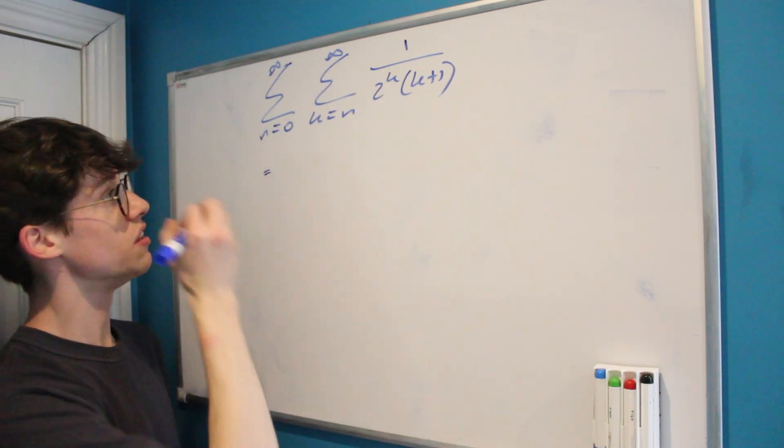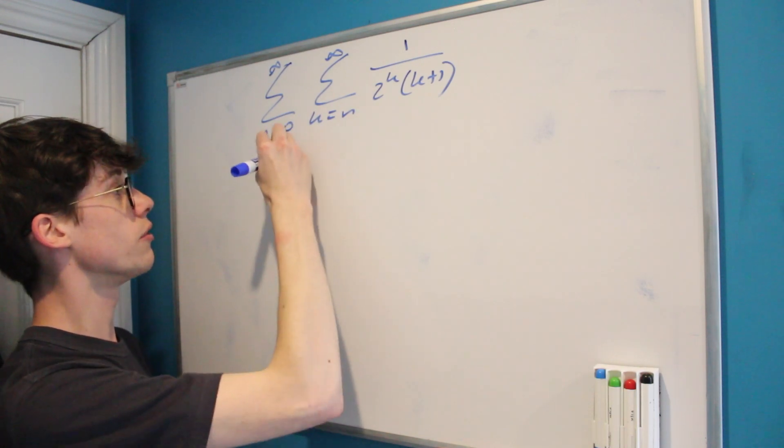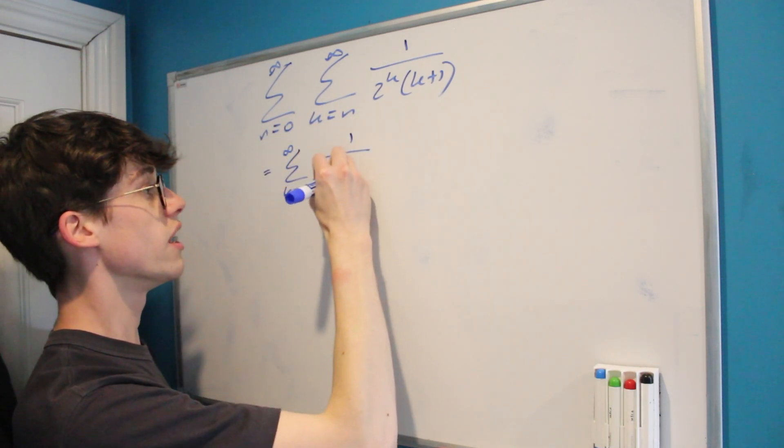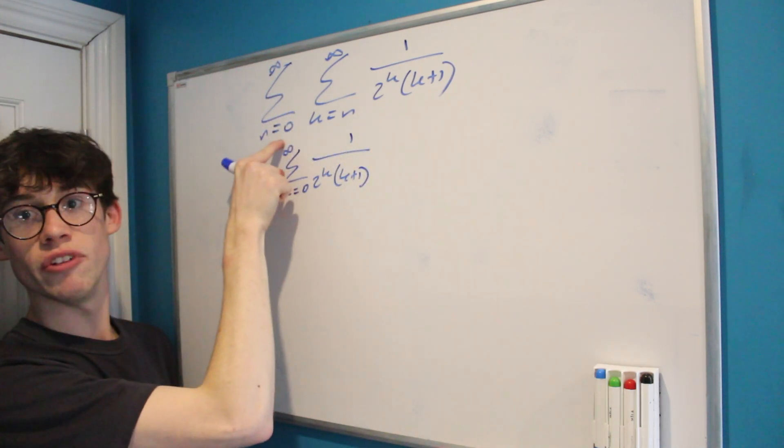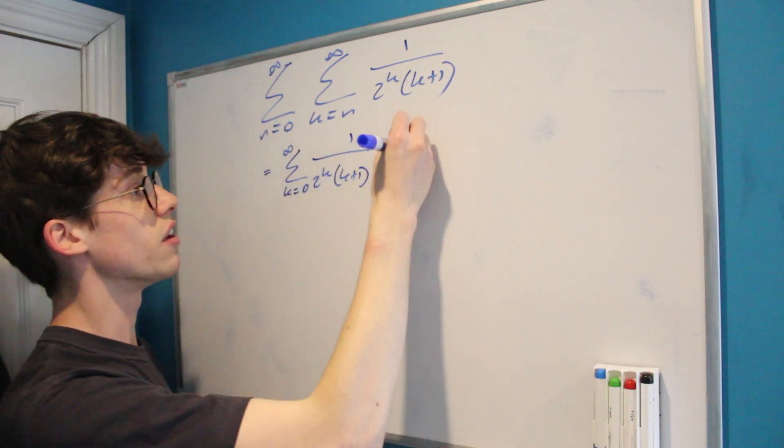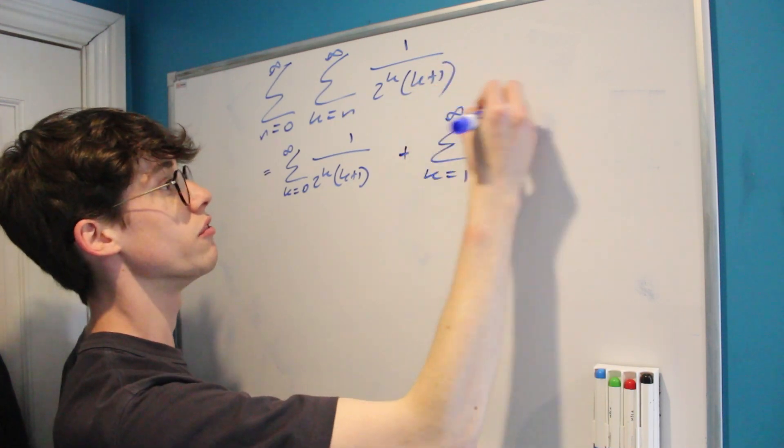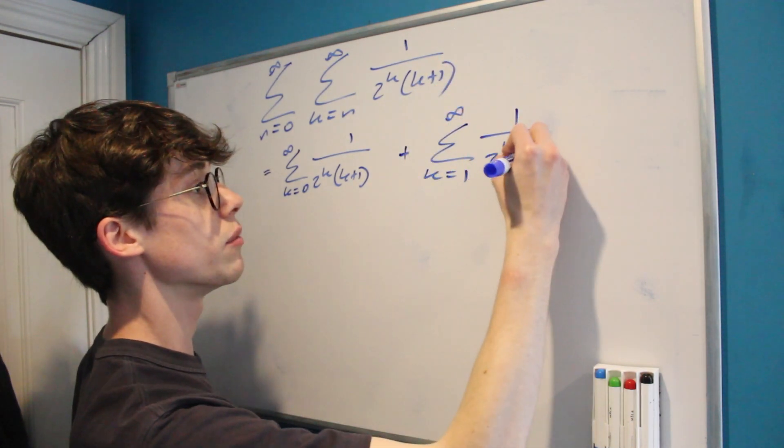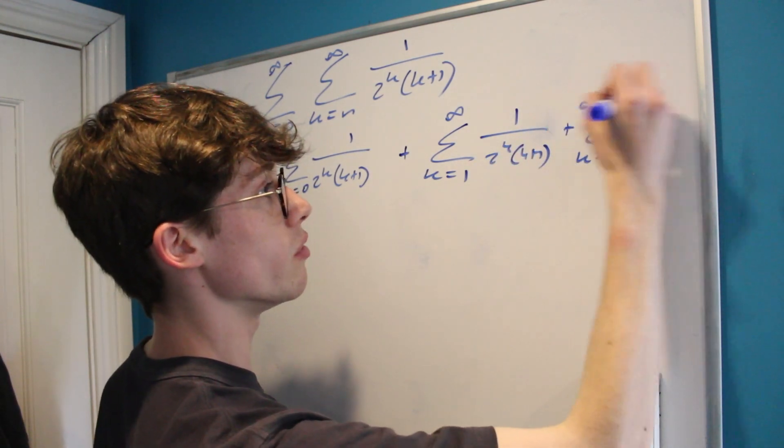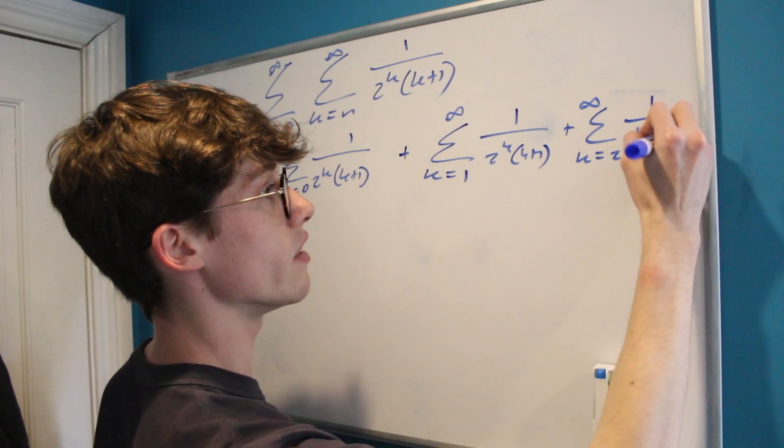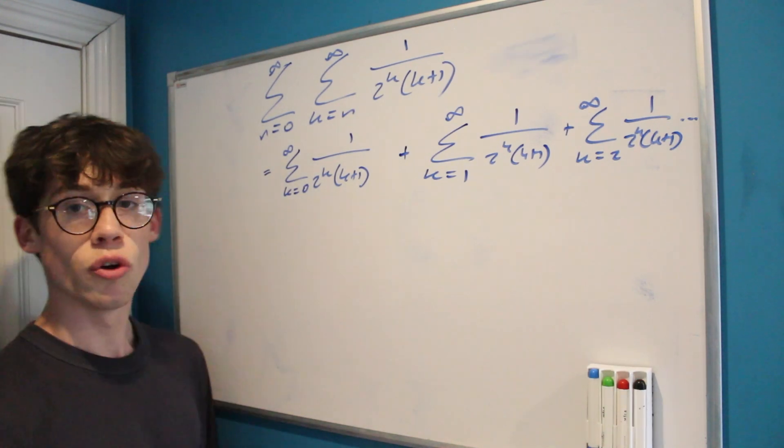So let's think about what the first few terms of this is going to look like. Well, when n equals 0, we're going to have the sum from k equals 0 to infinity of 1 over 2 to the k times k plus 1. So that's the first term in our sum over here. The second term is of course when n equals 1, and that's going to be the sum from k equals 1 to infinity of 1 over 2 to the k times k plus 1. And of course our next one would be when k equals 2 to infinity of 1 over 2 to the k times k plus 1, and we would go on adding like this all the way up to infinity.